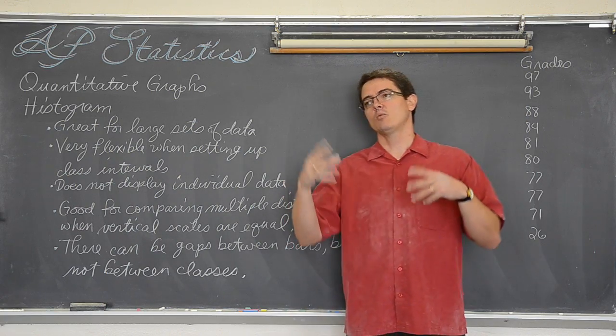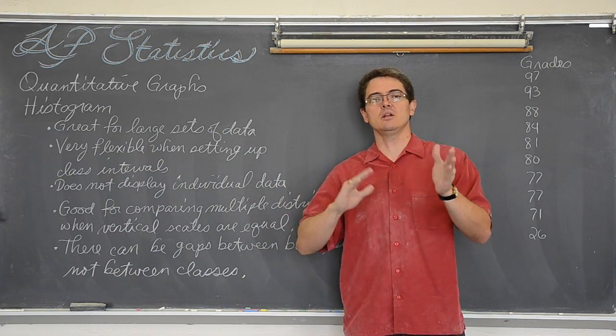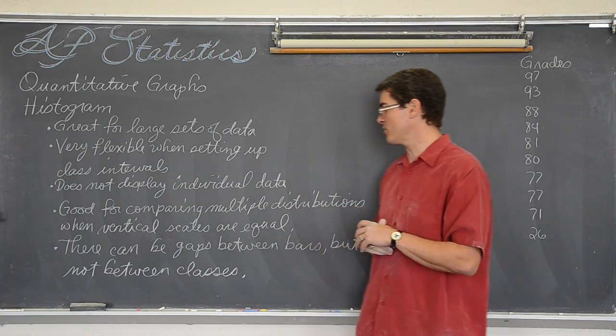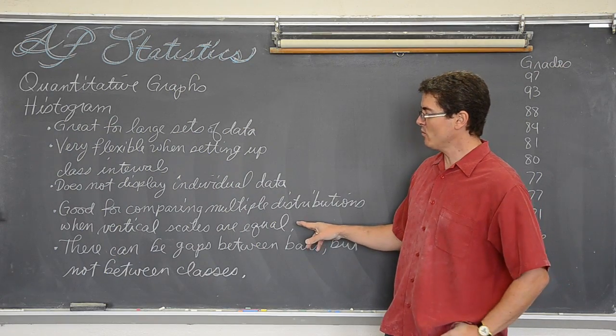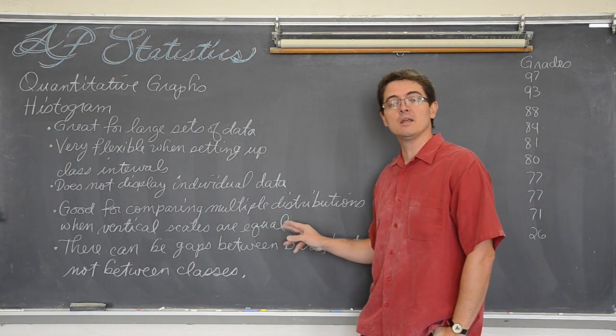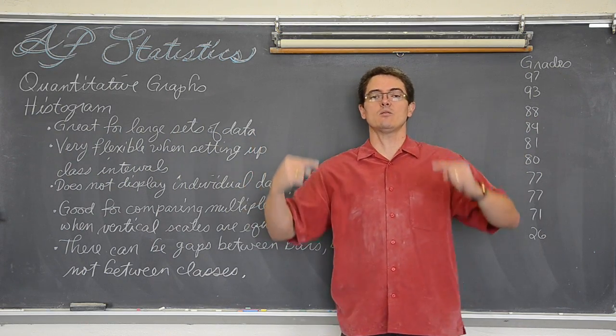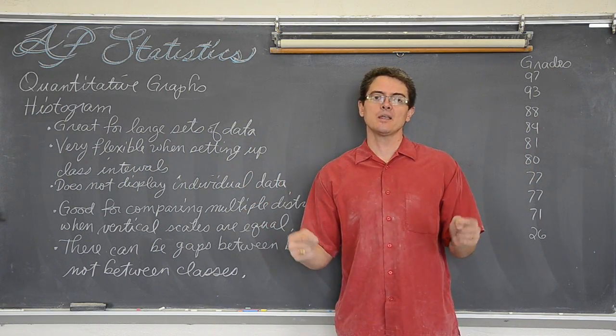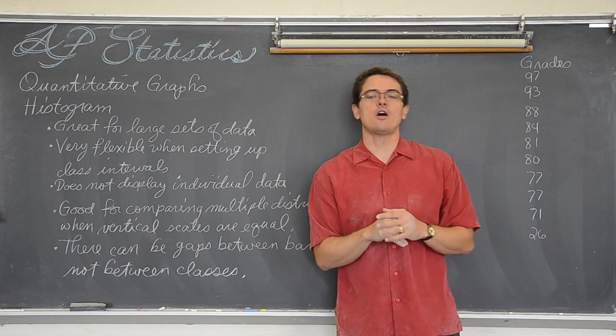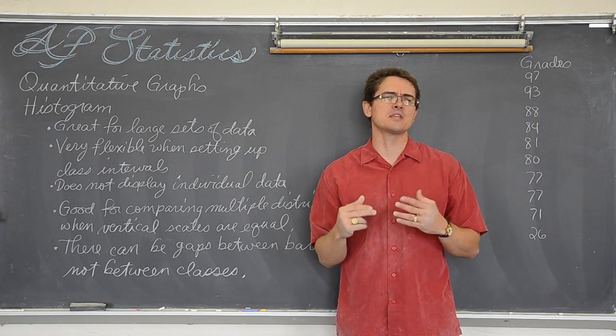And pretty quickly be able to compare those distributions. Which one has the lowest mean, highest mean, where is the mode at, where is the peak at, and compare those graphs pretty easily. The most common way of making these vertical scales equal when you want to compare multiple distributions, is instead of making that y-axis a count, how many pieces of data fall in the class width you define, make them percents.